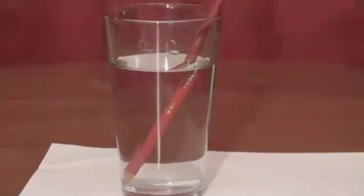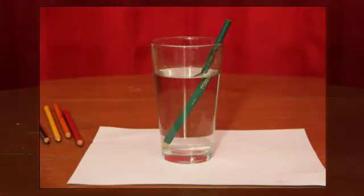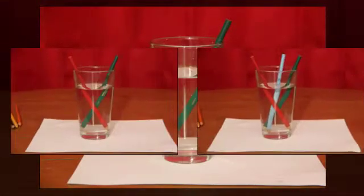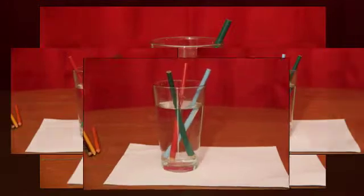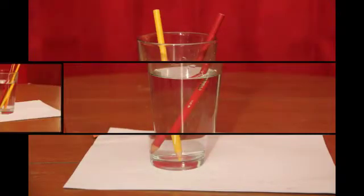So when you place the ink pen in the glass of water it appears broken because the light above the water is traveling in one direction while the light in contact with the water has refracted.